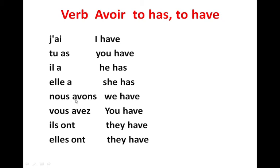'Nous avons' — we have. Here we make the liaison: when 's' is followed by a vowel, 's' is pronounced 'z'. 'Vous avez' — you have, again with liaison 'z'. 'Ils ont' — they have, again liaison, 's' followed by a vowel. 'Elles ont' — they have. 'Ils ont' for masculine and 'elles ont' for feminine. I hope that's clear.